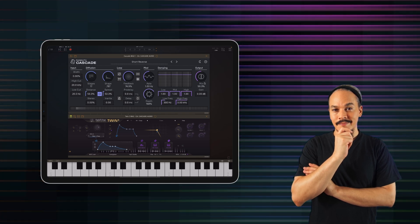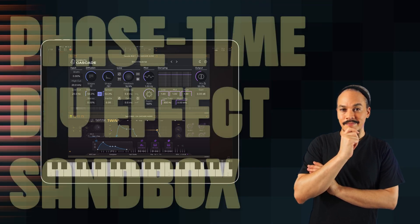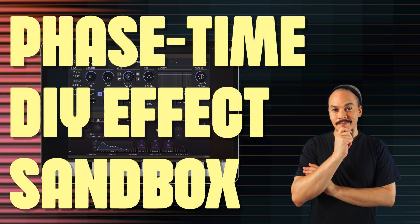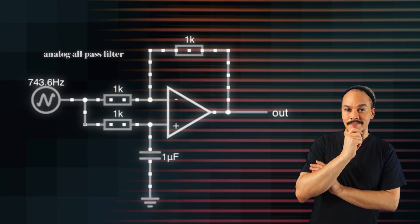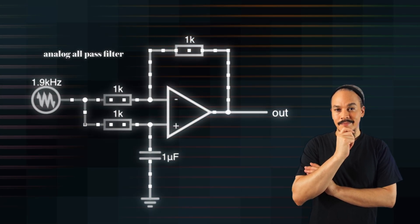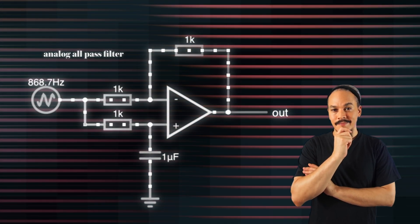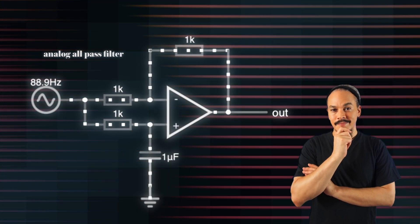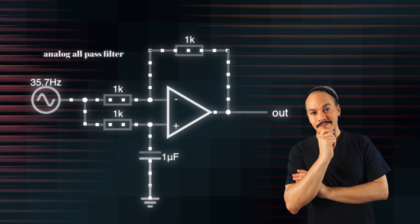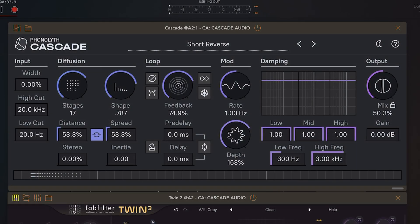I really want to highlight that when you're working with Cascade you are working within a sandbox for building time-based and phase-based effects. The all-pass filter is the lifeblood of a reverb, but it is also used for building a wide range of other effects — it's one of the most useful filters you could ever have. So we've already gone big and it sounds amazing. But what happens when we go small?